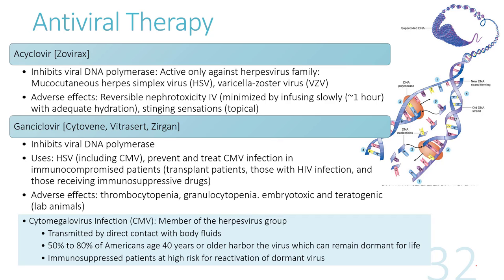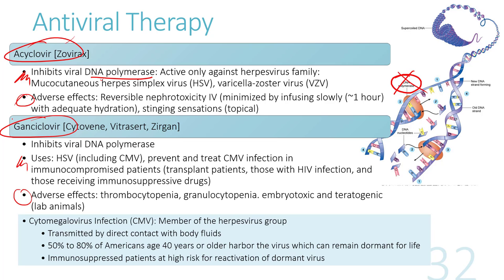The final topic is antiviral therapy. Two antivirals — aciclovir and ganciclovir — work by inhibiting viral DNA polymerase, the enzyme involved in creating new strands of viral DNA. Inhibiting this enzyme reduces viral DNA formation. The uses and adverse effects of each drug are noted on the slide.